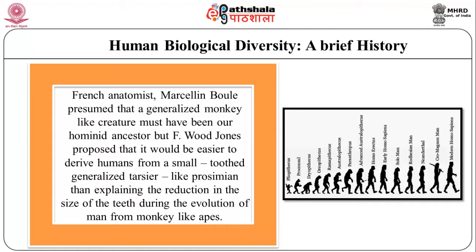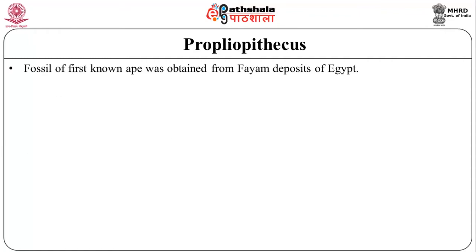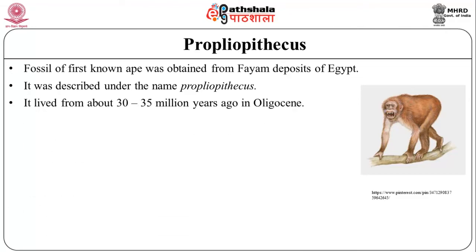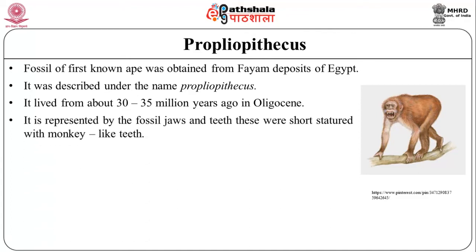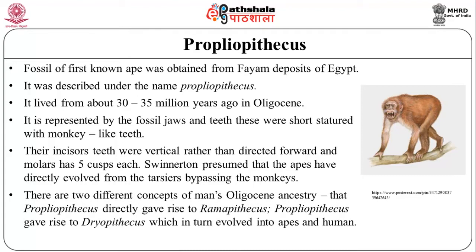Wood Jones proposed that it would be easier to derive humans from a small-toothed, generalized tarsier-like prosimian than to explain the reduction in tooth size during evolution from monkey-like apes. The Propliopithecus is a fossil of the first known ape, obtained from Fayum deposits of Egypt. It lived from around 30 to 35 million years ago in the Oligocene and is represented by fossil jaws and teeth. These were short-statured with monkey-like teeth, a dental formula of 2-1-2-3, vertical incisors and molars with 5 cusps each.